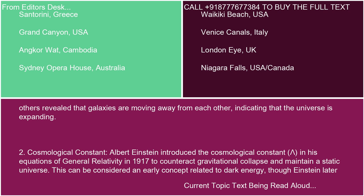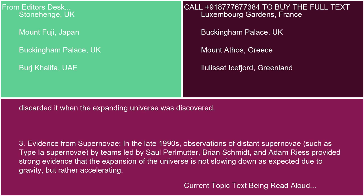Cosmological constant: Albert Einstein introduced the cosmological constant, lambda, in his equations of general relativity in 1917 to counteract gravitational collapse and maintain a static universe. This can be considered an early concept related to dark energy, though Einstein later discarded it when the expanding universe was discovered.